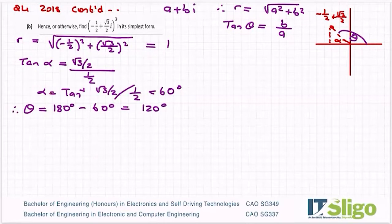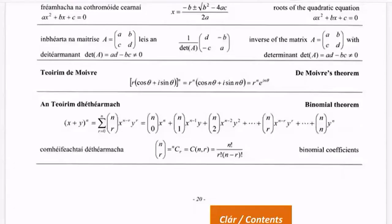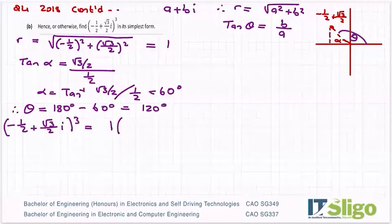So then I can write minus a half plus root 3 over 2i to the power of 3 as 1. So it's r, that's my r. Cos theta plus i sine theta. Cos 120 degrees plus i sine 120 degrees. And of course, it's to the power of 3, because that's what's in my question.